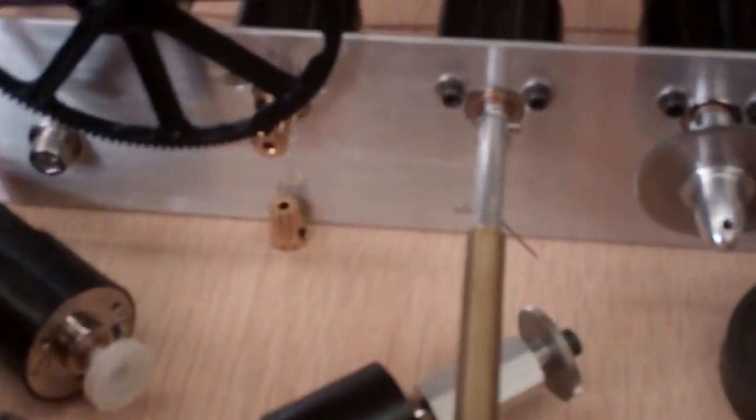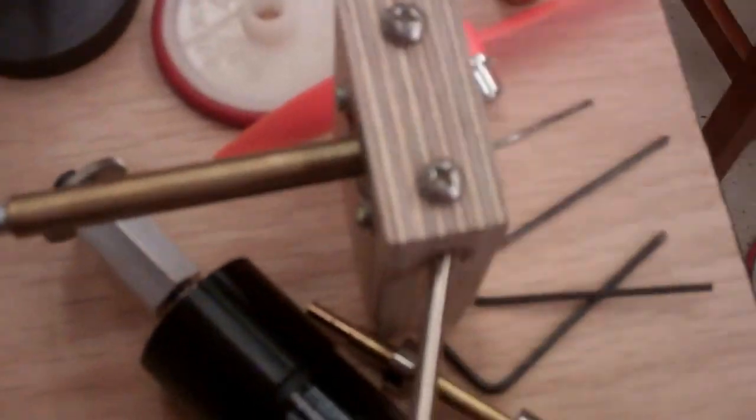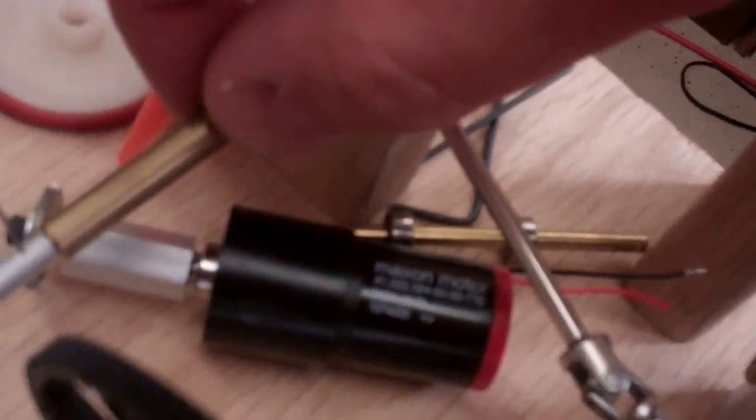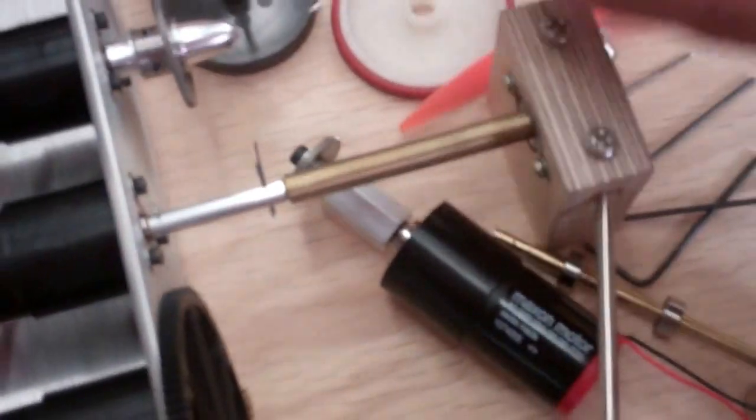Here's a shaft extension with K&S tubing and K&S brass going into a ball bearing mounted in this block over here, just demonstrating how you can lengthen the shaft to any length you need.